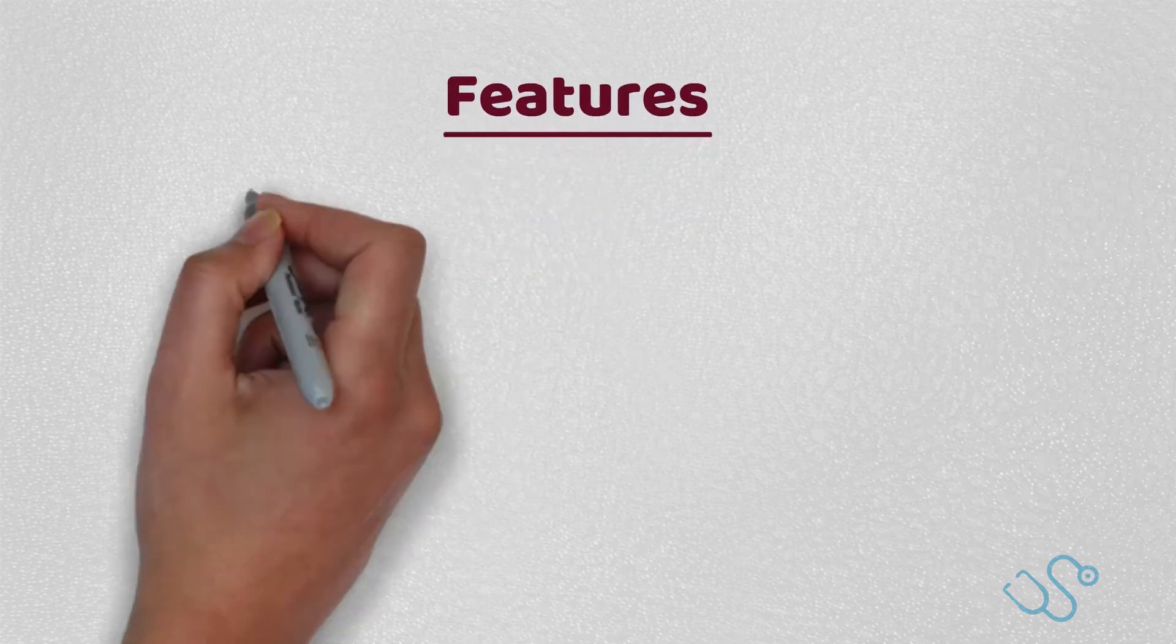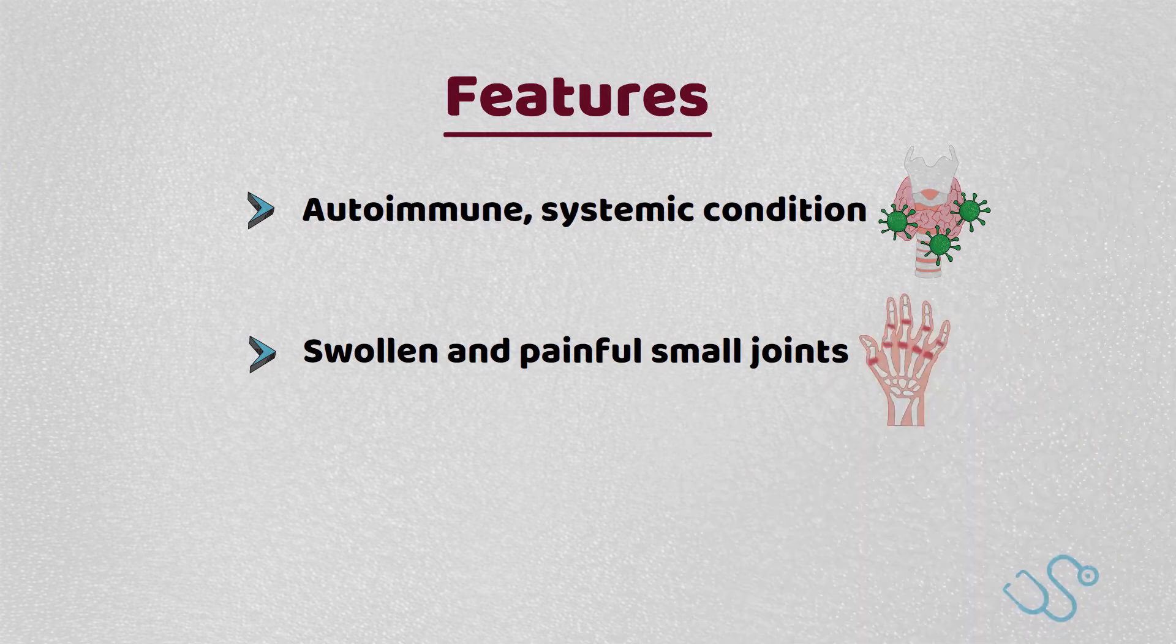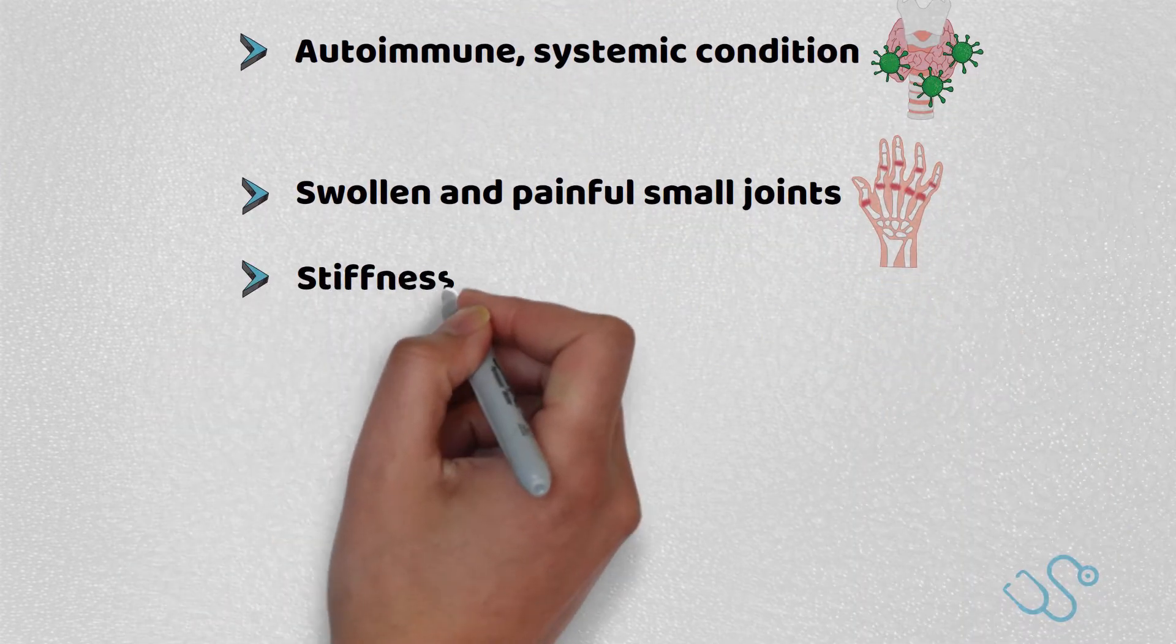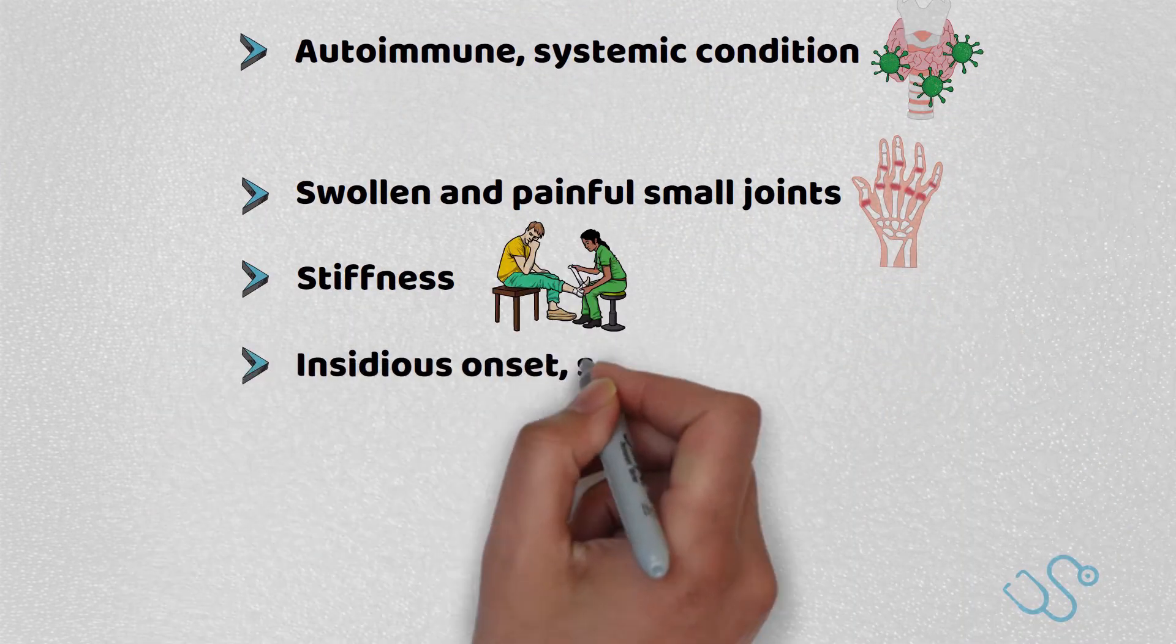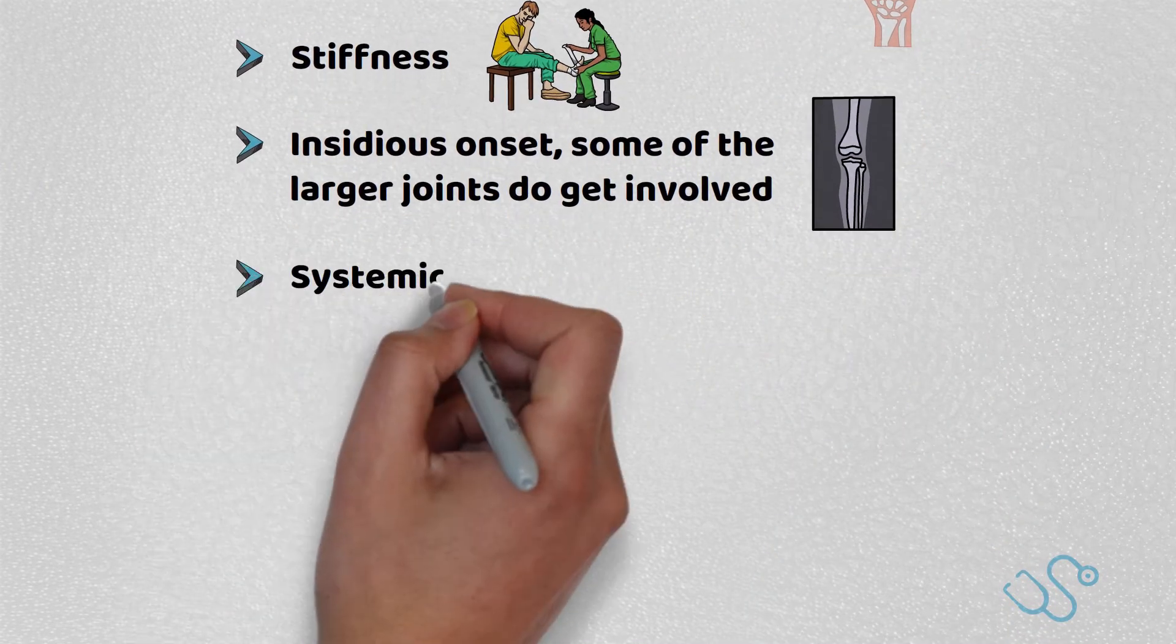Rheumatoid arthritis is an autoimmune systemic condition that often presents with swollen, painful small joints with associated stiffness. Over time, and with insidious onset, some of the large joints do get involved, with numerous organs being involved with systemic upset.